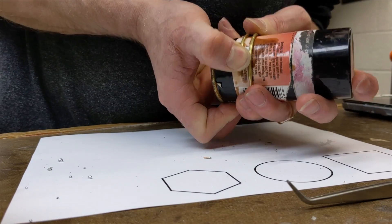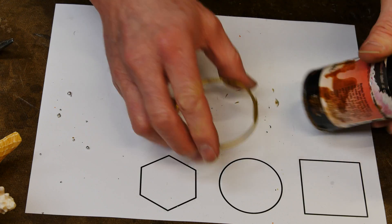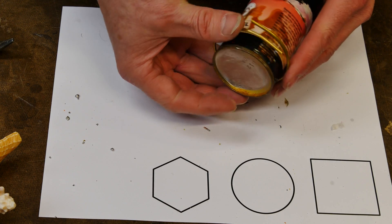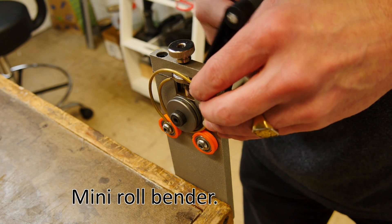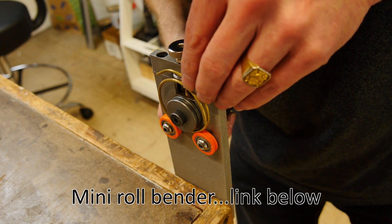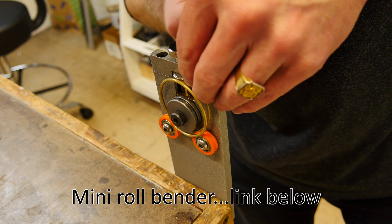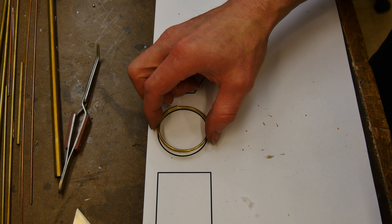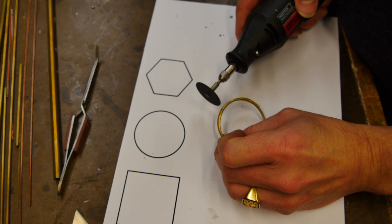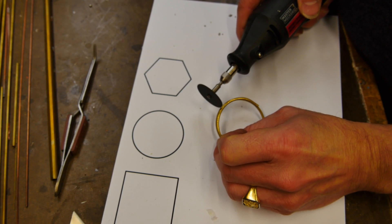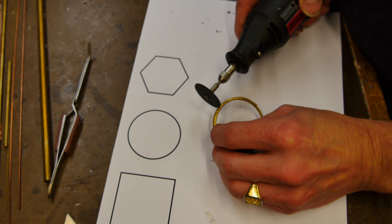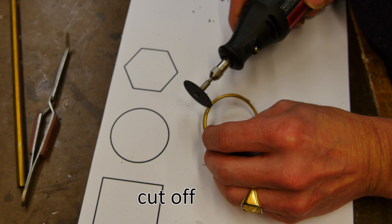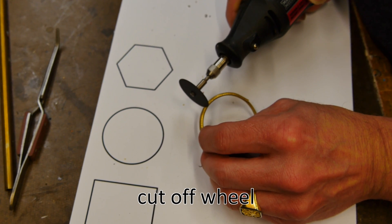Now the problem with this method is that you get some spring back and so you have to basically find the right size tube to bend it around or you need a little roll bender. This is a guitar fret bending tool and this allows me to roll the circle in exactly the correct diameter that is a special tool that I bought on eBay. And then I take the Dremel with a cutoff wheel and I slice through the part that I've bent.